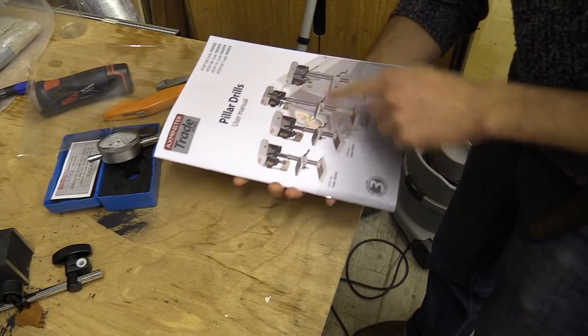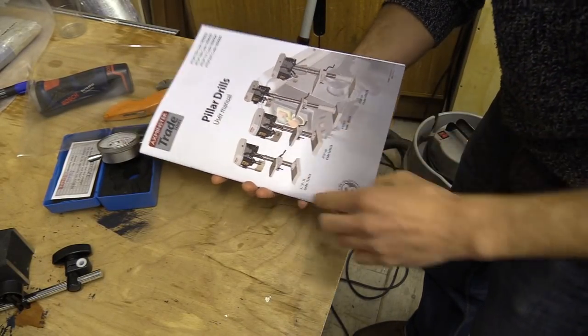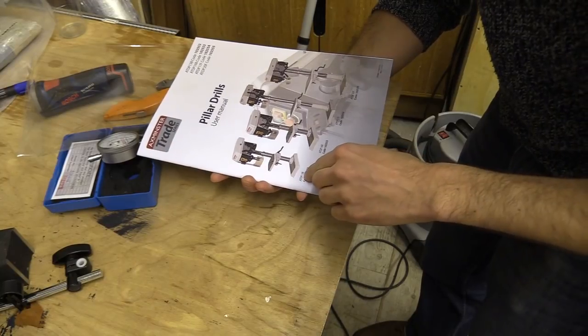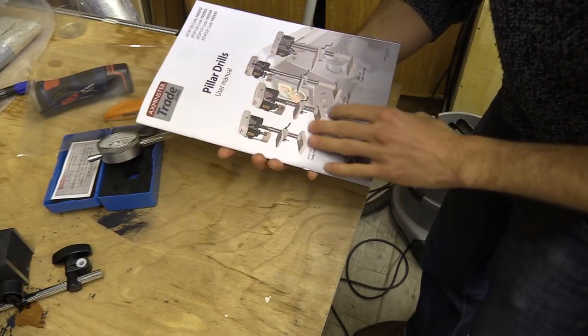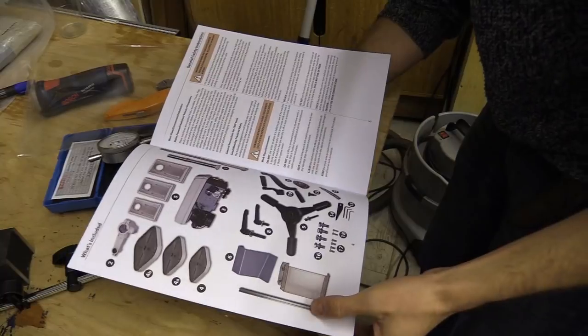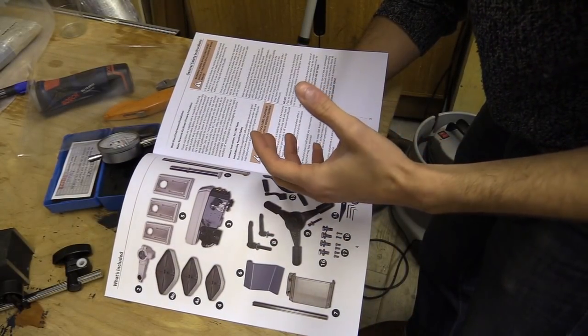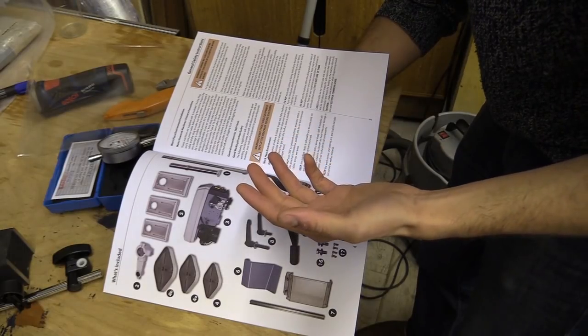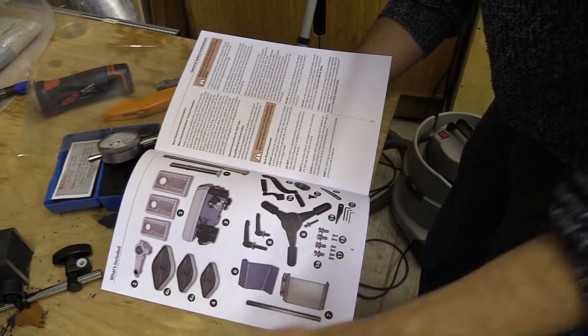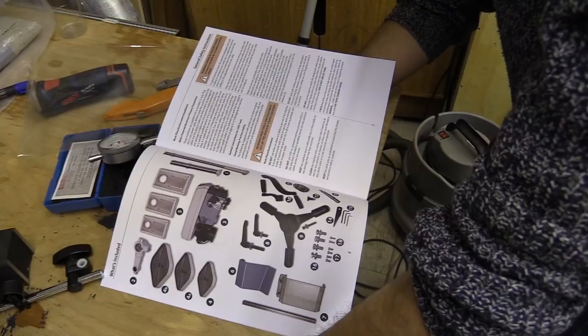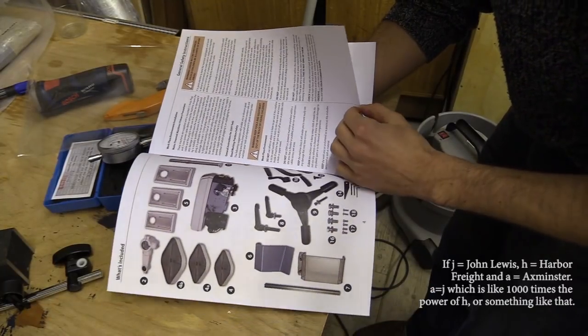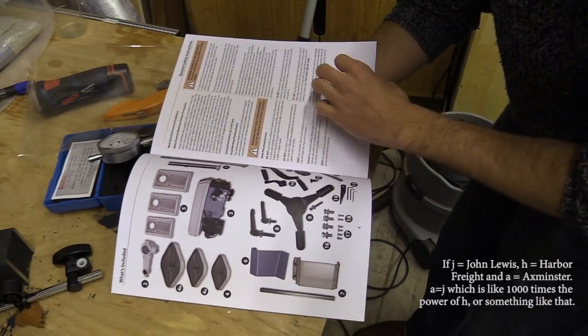Ok so I bought a new pillar drill. I bought the smallest one, the ATDP13B, it's from Axminster. If you're not from the UK they're like the, well I don't know how to explain it, they're like the sort of John Lewis of tools. They're pretty good, quick delivery, really good customer service.